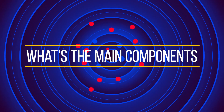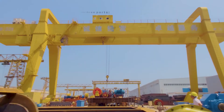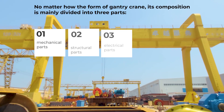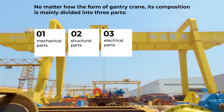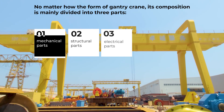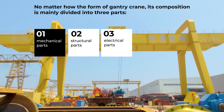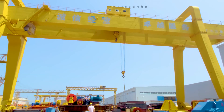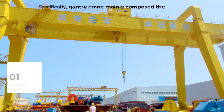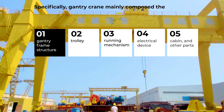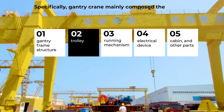What are the main components of gantry cranes? No matter the form of gantry crane, its composition is mainly divided into three parts: mechanical parts, structural parts, and electrical parts. Specifically, a gantry crane is mainly composed of the gantry frame structure, trolley, running mechanism, electrical device, cabin, and other parts.